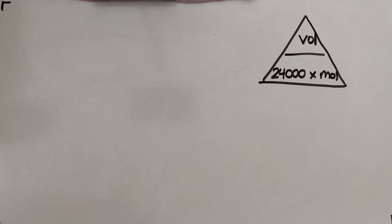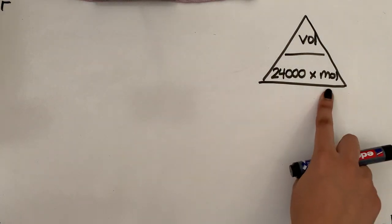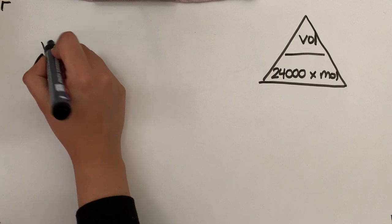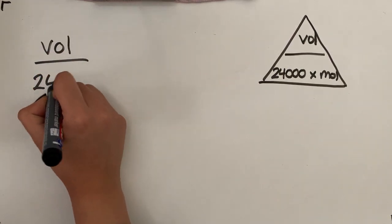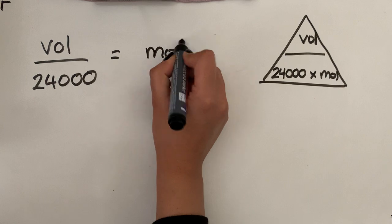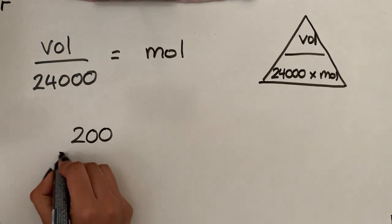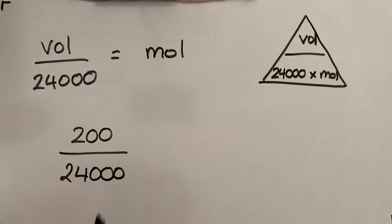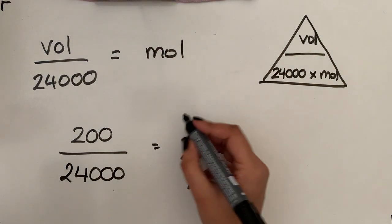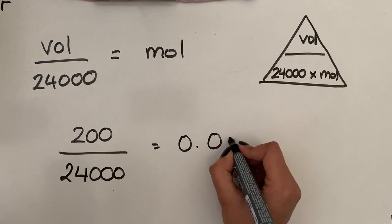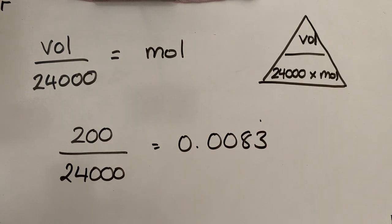So we're now working out the moles. So if we're working out moles, we do volume divided by 24,000 and that's going to give us our moles. So question number one, if we've got 200 centimeters cubed of carbon dioxide, how many moles is that? So we do 200 divided by 24,000 and that should give you 0.0083 recurring.